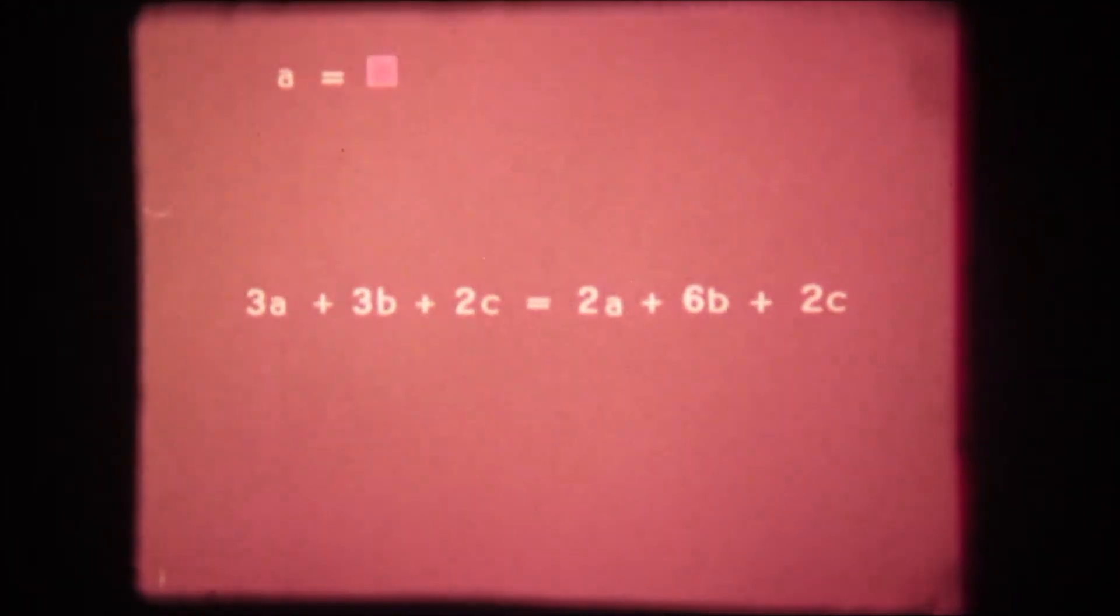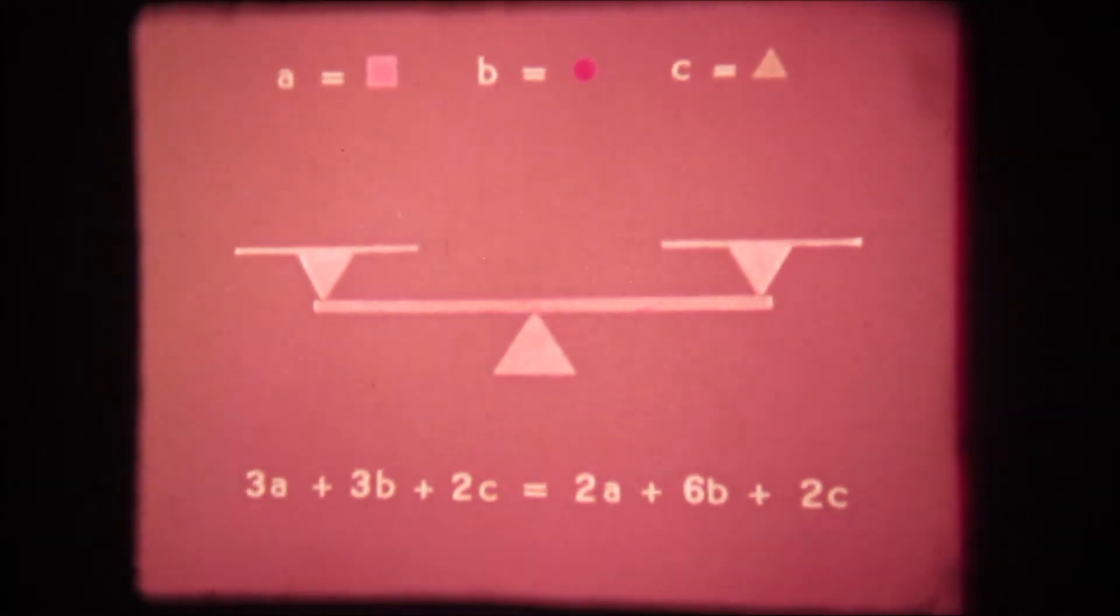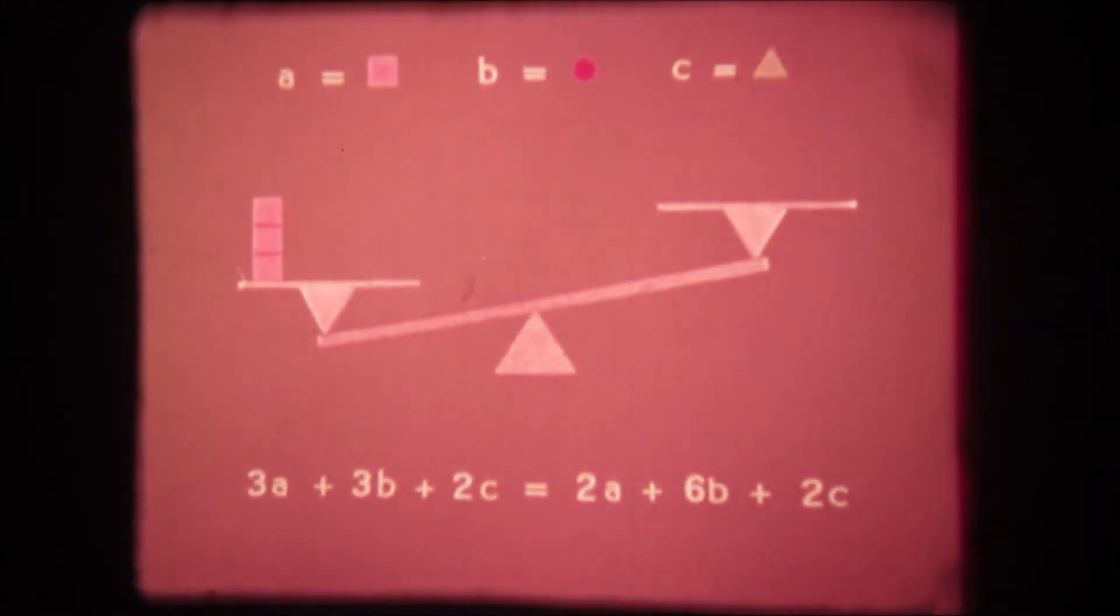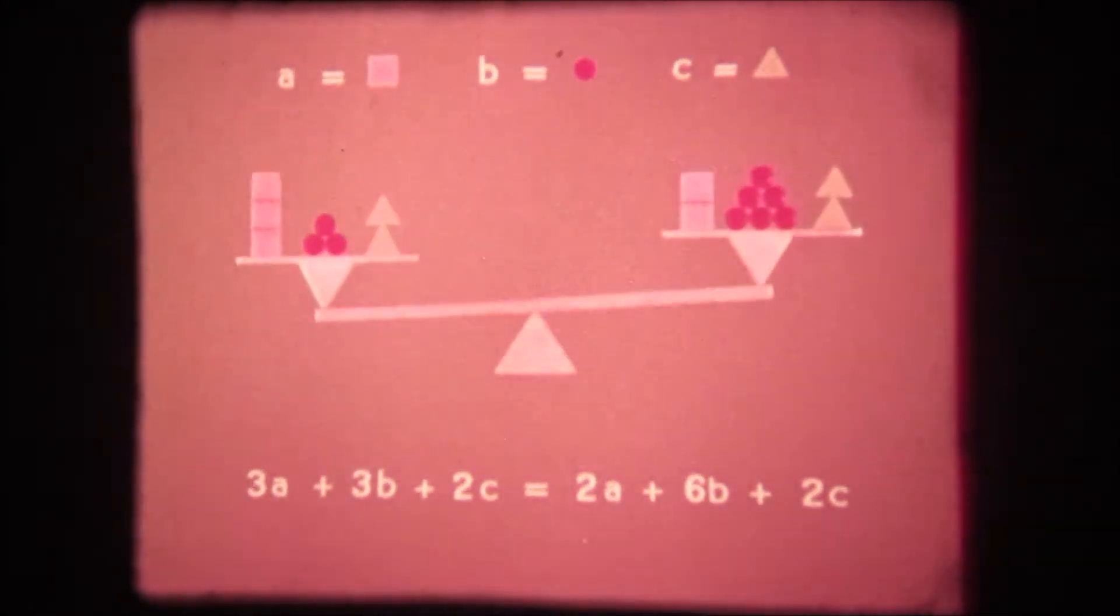We will let A be a square, B a disk, and C a triangle. Now let's put our quantities on a scale where we can see them. Our equation tells us that three A's plus three B's plus two C's are equal in value to two A's plus six B's plus two C's.